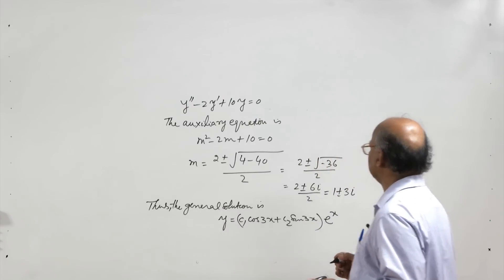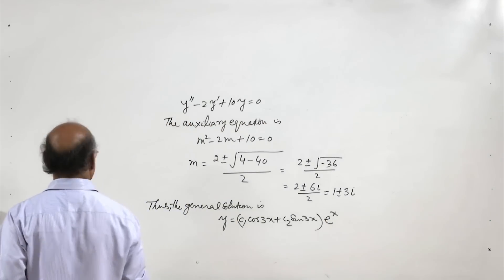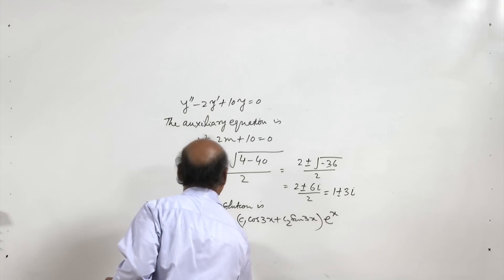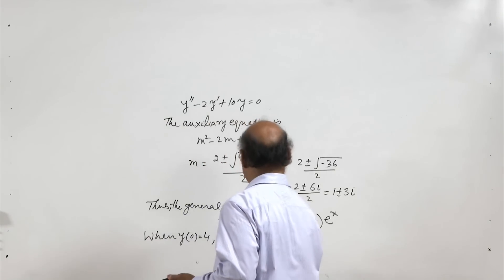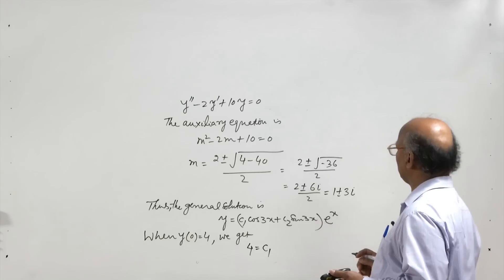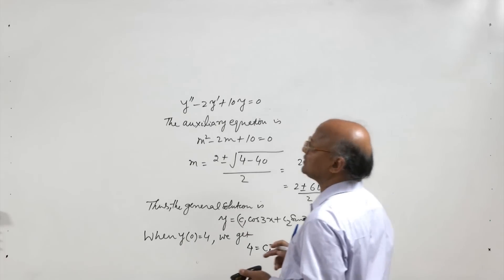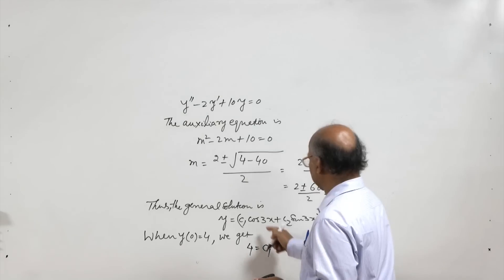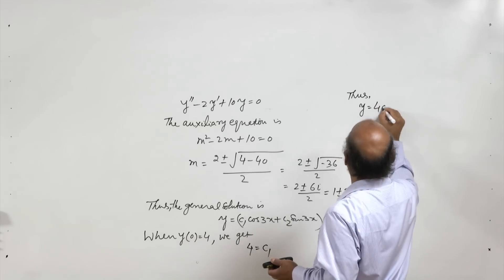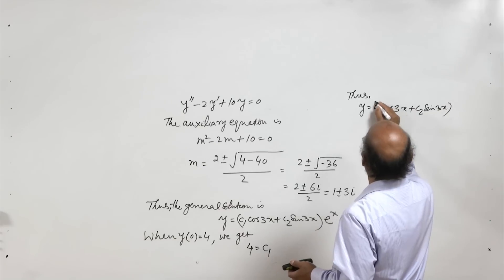With the given initial conditions we shall determine the values of c₁ and c₂. Using y(0) = 4: putting x = 0, since cos(0) = 1, sin(0) = 0, and e⁰ = 1, we get c₁ = 4. Thus y = e^(x)·(4·cos(3x) + c₂·sin(3x)).